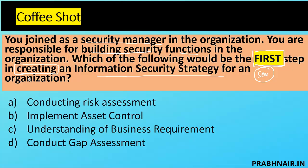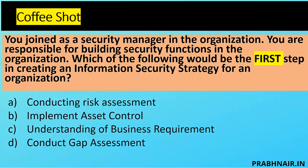They are in the process of creating — present tense, not yet created. Option A: conducting a risk assessment — against what? We need information first. Option B: directly implementing access control — without knowing the business, this doesn't make sense. Option C: understanding the business requirement — makes sense, it's important to know how the company works, its vision and mission. Option D: gap assessment — before that I need to know what the requirement is. Manager's role is not to implement, so B is removed.